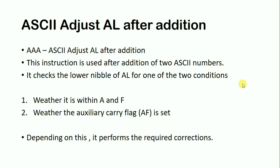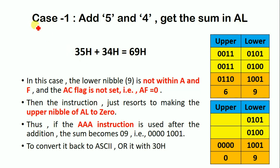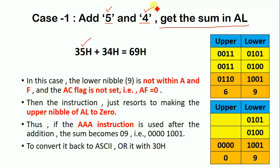To understand the ASCII Adjust After Addition, I am giving two examples. Consider example one: we have to add 5 and 4, two ASCII values, and get the sum into register AL. In assembly language, we convert ASCII '5' to its hexadecimal value 35H and ASCII '4' to 34H. When adding 35H and 34H, we get the result 69H.